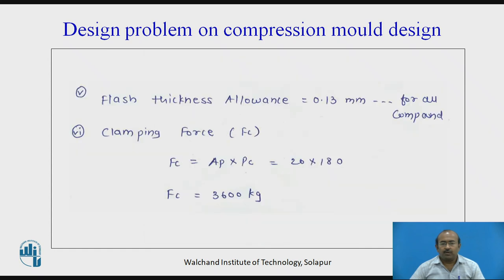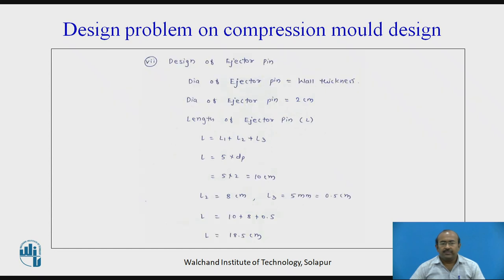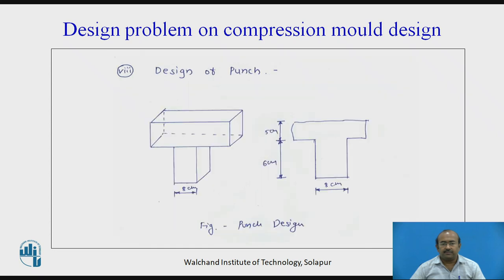Flash thickness allowance for all compounds is referred directly as 0.13 mm. Clamping force using the formula Ap into Pc comes out to be 3600 kg. Design of ejector pins — the diameter equals the wall thickness: 2 cm. Length of the ejector pins is the addition of three distinct lengths, coming out to be 18.5 cm. Design of punch — using the dimensions, the drawing comes out like this.